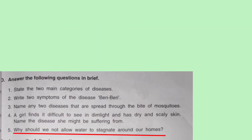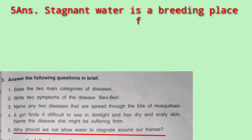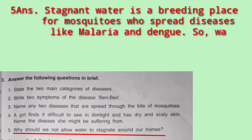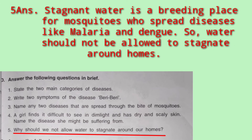Next: why should we not allow water to stagnate around our homes? Stagnant water around our homes can lead to mosquito breeding, which spreads diseases like malaria. That is why we should not allow water to stagnate.